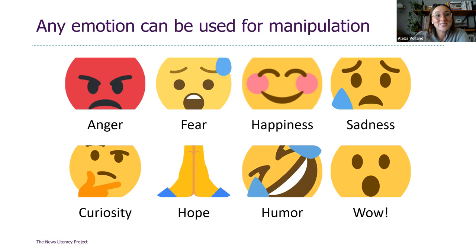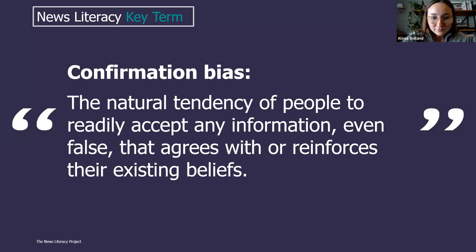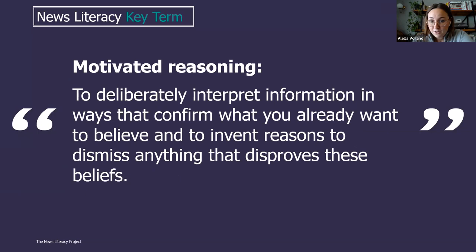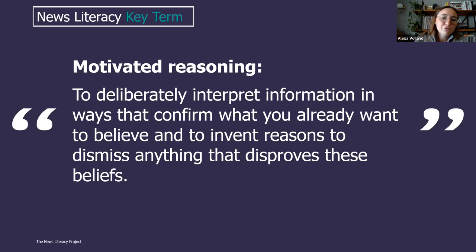When we feel those emotions — especially when seeing political posts that use language like 'the left' or 'the right' — something else is happening in the background: feelings of validation. When we feel validated, all fact-checking typically goes out the window. We completely forget to fact-check the things that make us feel right. This brings us to a couple of key terms. The first is confirmation bias — a completely natural tendency to accept information that reinforces our own beliefs: 'This aligns with my views and morals, therefore it must be true.' The second is motivated reasoning — when we deliberately interpret information to confirm our beliefs and find ways to dismiss anything that disproves them.